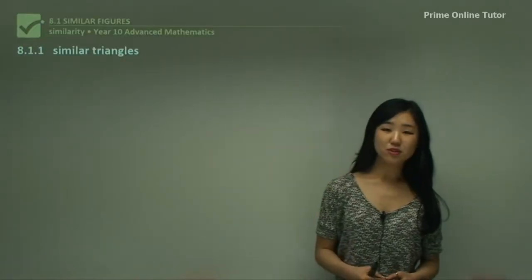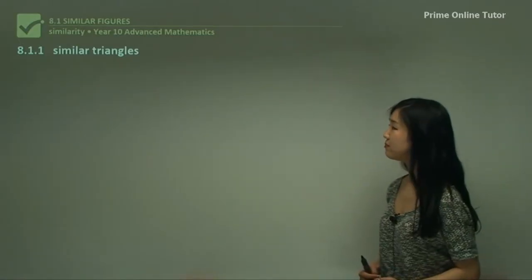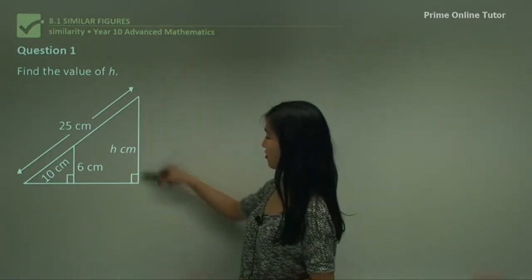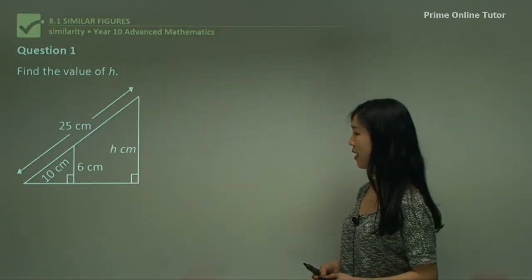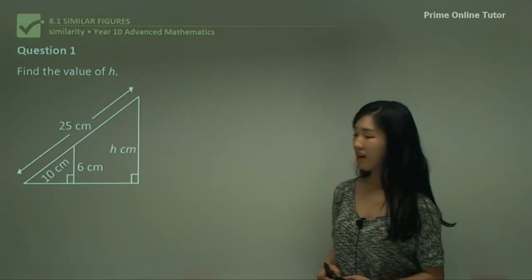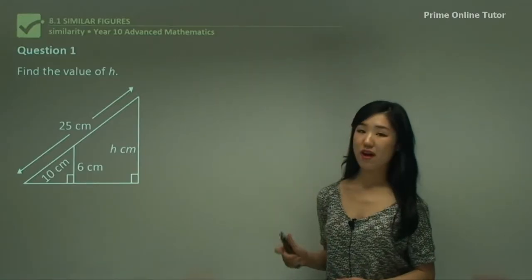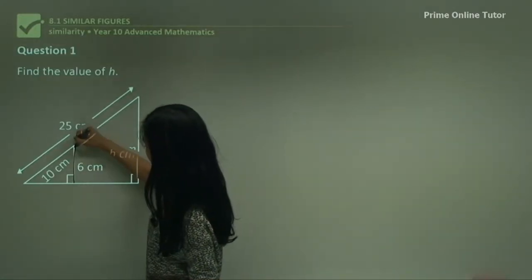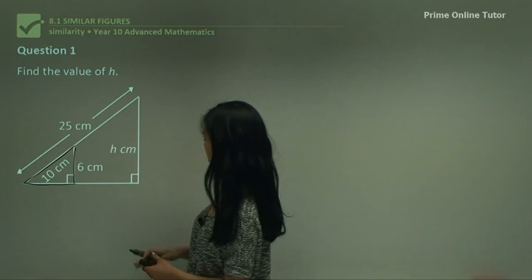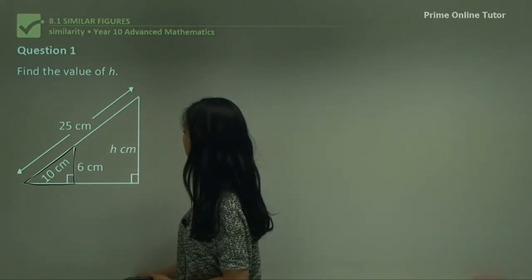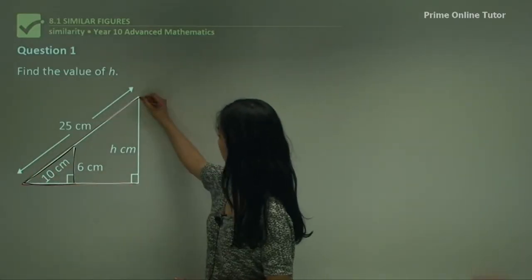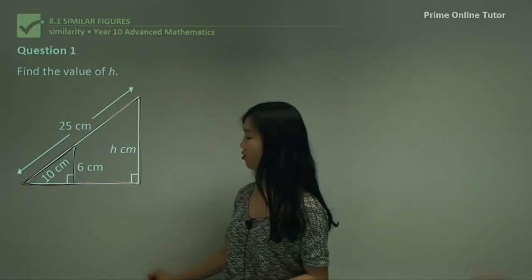Starting with some similar triangles, we're going to look at some questions. Question 1 says: find the value of h. You can see that h is our pronumeral, so we're looking for that. I hope you can see two similar triangles here — the first one is this small one, and the larger one is this outside one. So there are two triangles within the one big triangle.